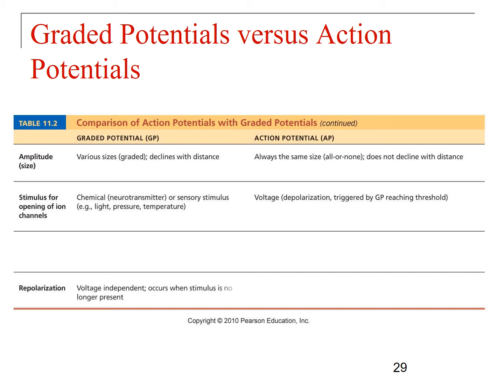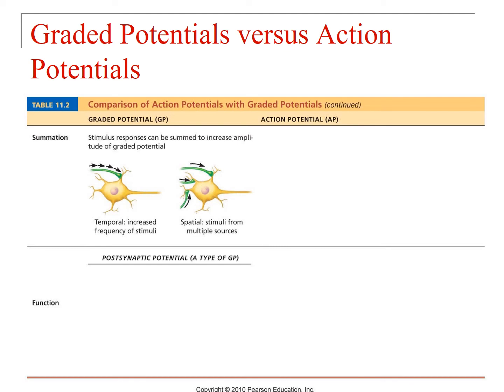Repolarization in a graded potential happens when the stimulus is no longer present — whether you have a hyperpolarizing IPSP or a depolarizing EPSP, once that stimulus goes away, your leak channels repolarize you back to resting potential. With an action potential, voltage determines when repolarization starts — repolarization happens when sodium channels inactivate and potassium channels open. Graded potentials can have temporal or spatial summation, which can increase the amplitude of the graded potential. Action potentials are all-or-nothing — they either go all the way to positive 30 or don't happen at all, always with the same amplitude.